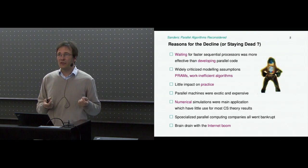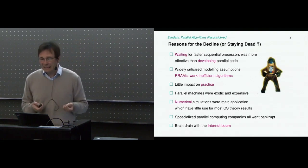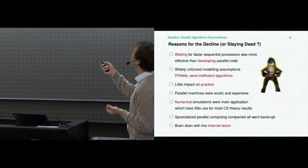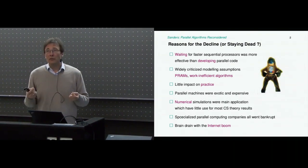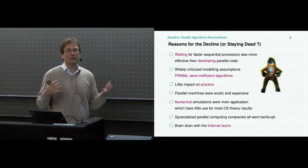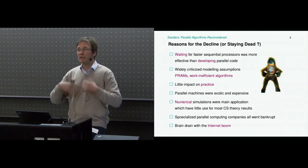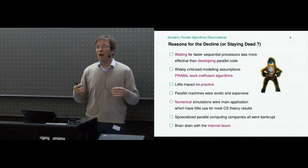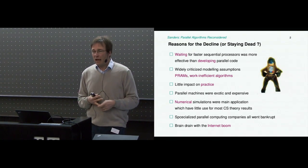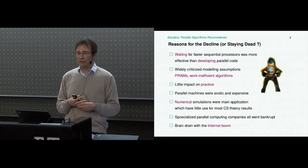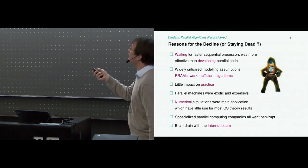Let's look at the reasons for the decline—some of which you might think are also reasons for staying dead. Who really killed parallel processing was the Intel bunny-suit guy used in their advertisements in the early 2000s. Most people perceived parallel processing as superfluous because you just waited a year and your sequential computer was twice as fast, due to clock frequency increases, automatic parallelization by instruction-level parallelism, and so on—giving enormous rates of performance improvement. At the same time, theorists were widely criticized for using unrealistic models like PRAMs and work-inefficient algorithms, and overall this had fairly little impact on practice.